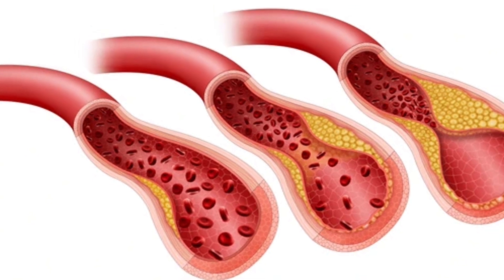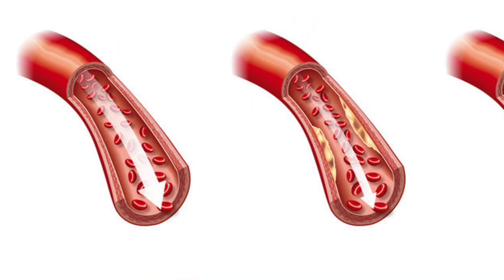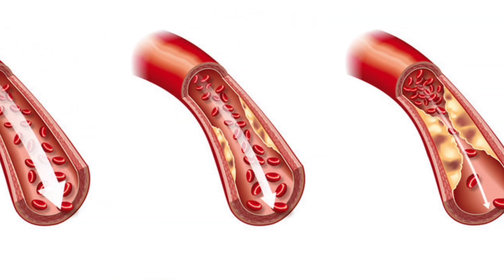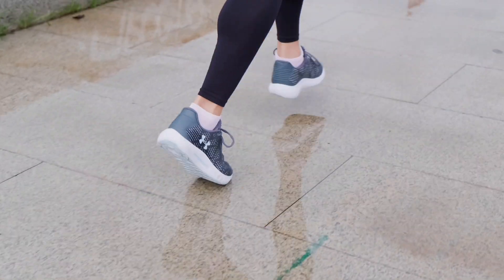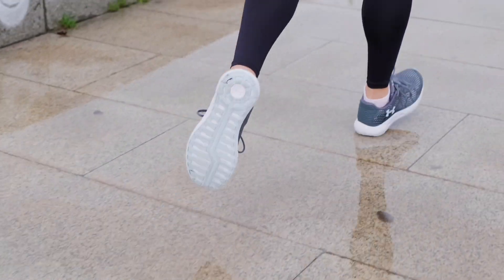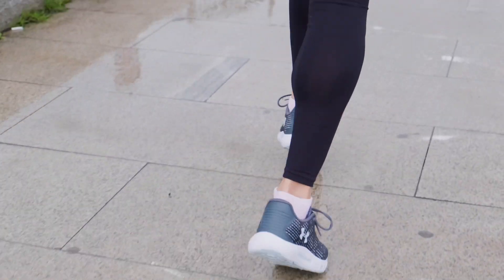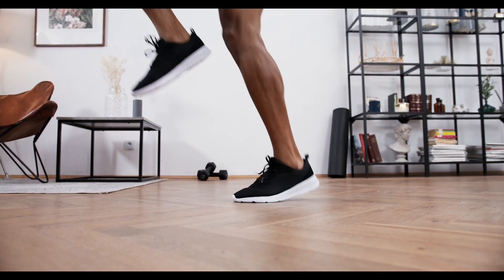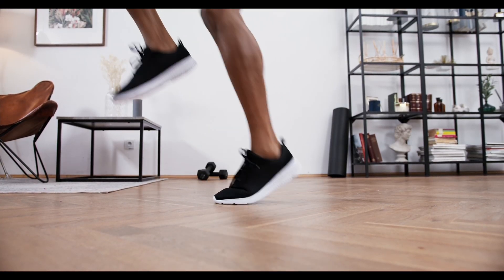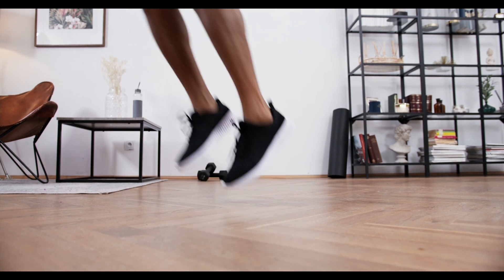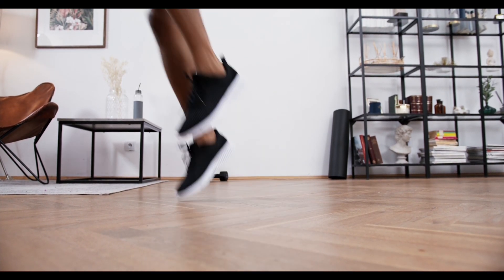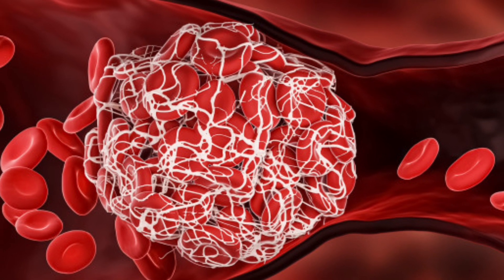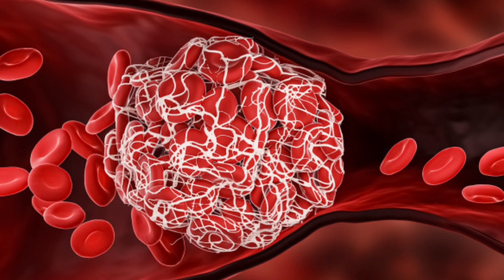Symptoms. The main symptoms of peripheral artery disease are pain, aches, fatigue, burning or discomfort in the muscles of the feet, calves or thighs. These symptoms most often appear during walking or exercise and disappear after a few minutes of rest. At first, these symptoms may only occur when climbing a hill, walking fast, or walking long distances. Over time, these symptoms appear faster and with less physical exertion.